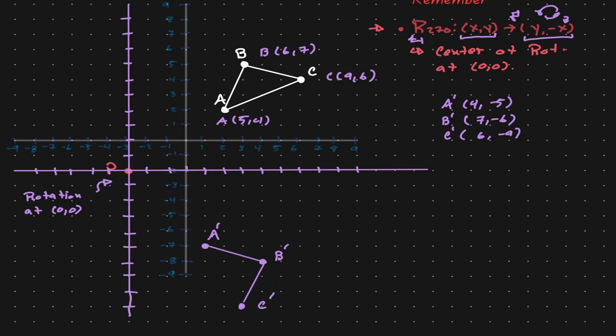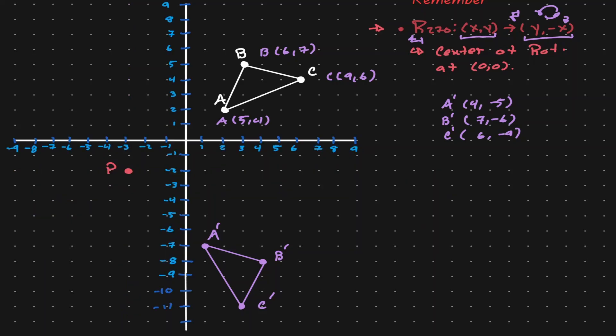We have our final locations. All we need to do is write them down using the original plane. Let's erase the purple plane and go back to the original plane. In terms of our original axis, A' is at its final location, B' is at its final location, and C' is at its final location. Therefore, we have found the location of triangle ABC after it was rotated by 270 degrees around point P.